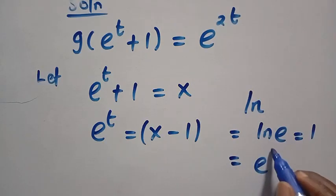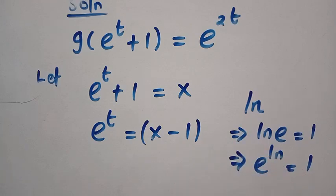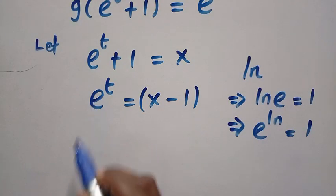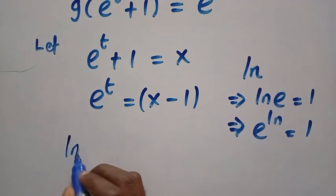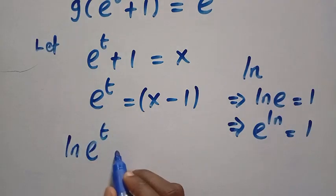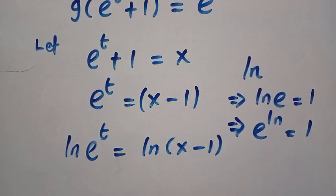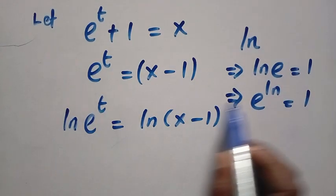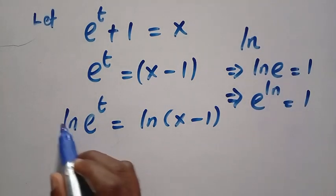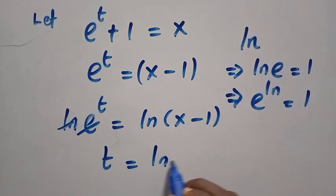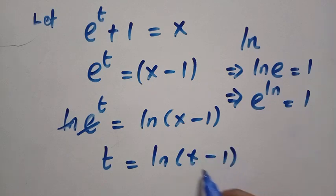So, introducing ln to this point is the best solution to make this e cancelled. We have ln(e^t) equals ln(x minus 1). And then, according to these rules, ln and e cancel, and we make t the subject of this formula as ln(x minus 1).